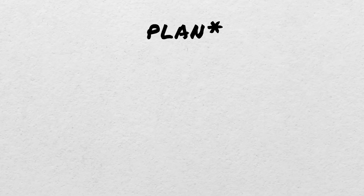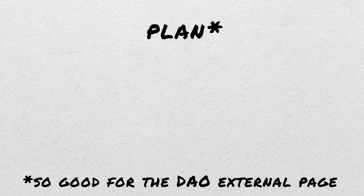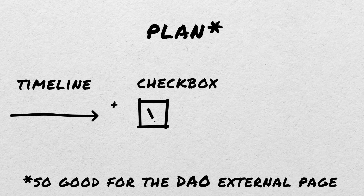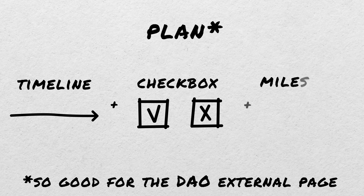In addition, especially for the external page of a DAO, you can write a plan in steps. It may include a separated timeline by month or quarter, a checkbox indicating whether it's done or not, and steps or milestones needed to reach the goal.